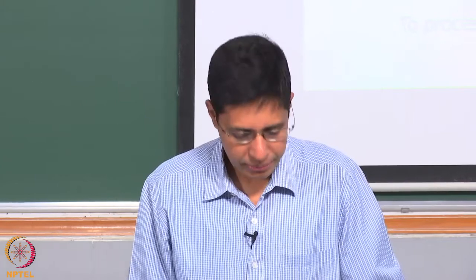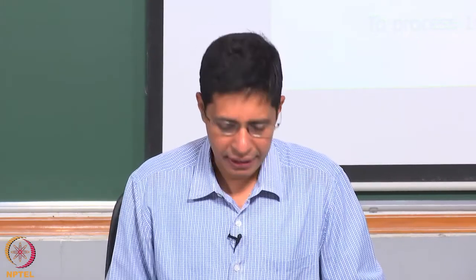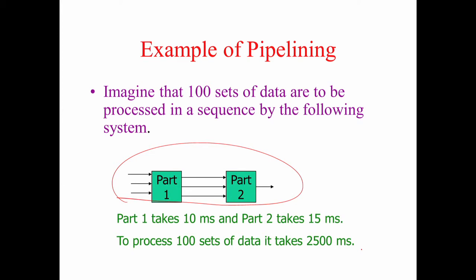We will start with pipelining. Looking at this particular diagram, there are two parts to the circuit. Inputs come in, get processed by Part 1 and then fed to Part 2. Assume Part 1 takes 10 milliseconds and Part 2 takes 15 milliseconds. For data to come out fully processed takes 25 milliseconds. For 100 sets of data, that is 2500 milliseconds.